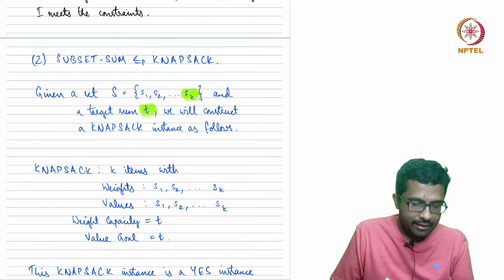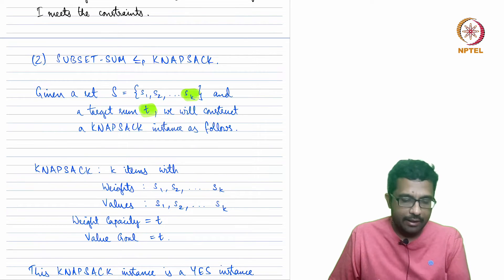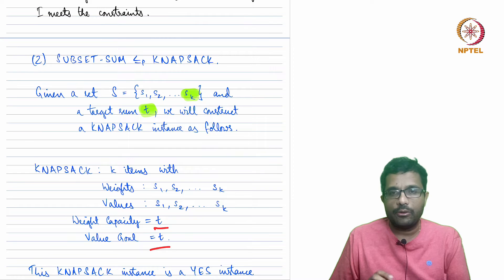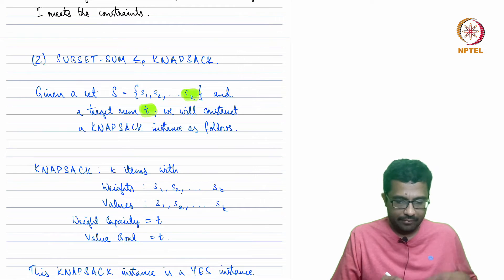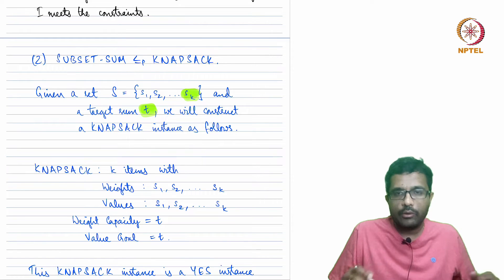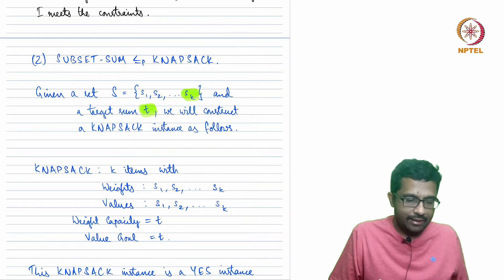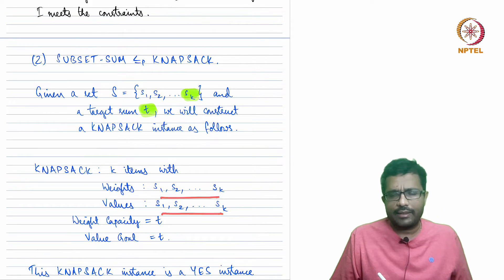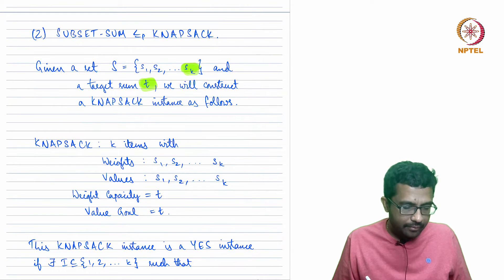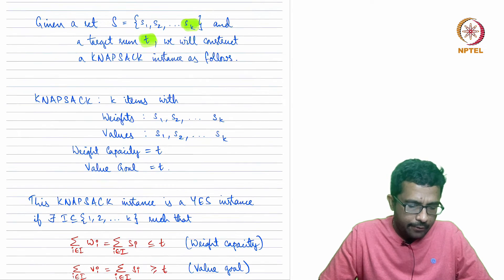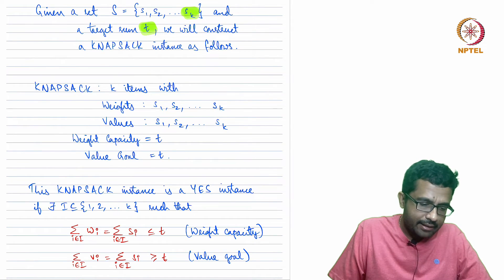Given the Subset Sum instance, we repeat the numbers as both the values and the weights. The target sum is repeated as both the weight capacity and the value goal. This is virtually the same instance rewritten, so it takes just the time to write it down — no calculations needed. Hence, this is a linear time (and therefore polynomial time) reduction.